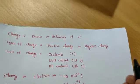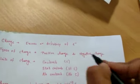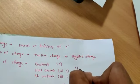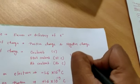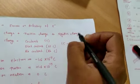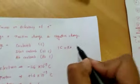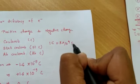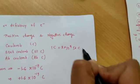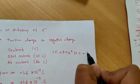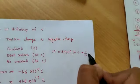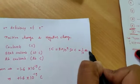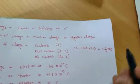The farad coulomb, and the relation: 1 coulomb is equal to 3 into 10 to the power 9 stat coulomb, which is equal to 1 upon 10 farad coulomb.